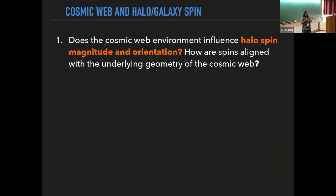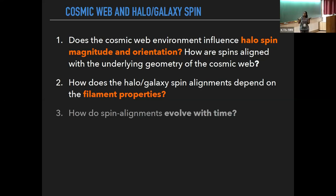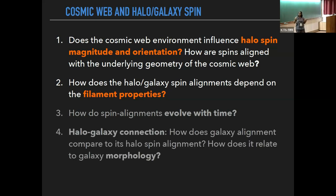You would therefore expect a correlation between the spin and shape of halos and galaxies and the underlying geometry of the cosmic web. What we address today is: does the cosmic web environment influence halo spin magnitude and orientation, and how does this alignment depend on filament properties? We also studied how these trends evolve with time and the connection between halo and galaxy alignments, but we'll focus on these two today.